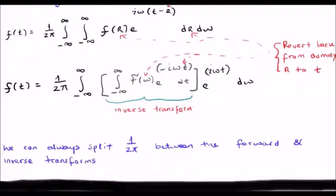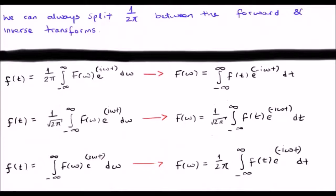So, there are lots of different ways of writing the Fourier transform, and they are all equivalent. For example, we could leave the 1 over 2 pi in the forward Fourier transform and have only a factor of 1 in the inverse transform.